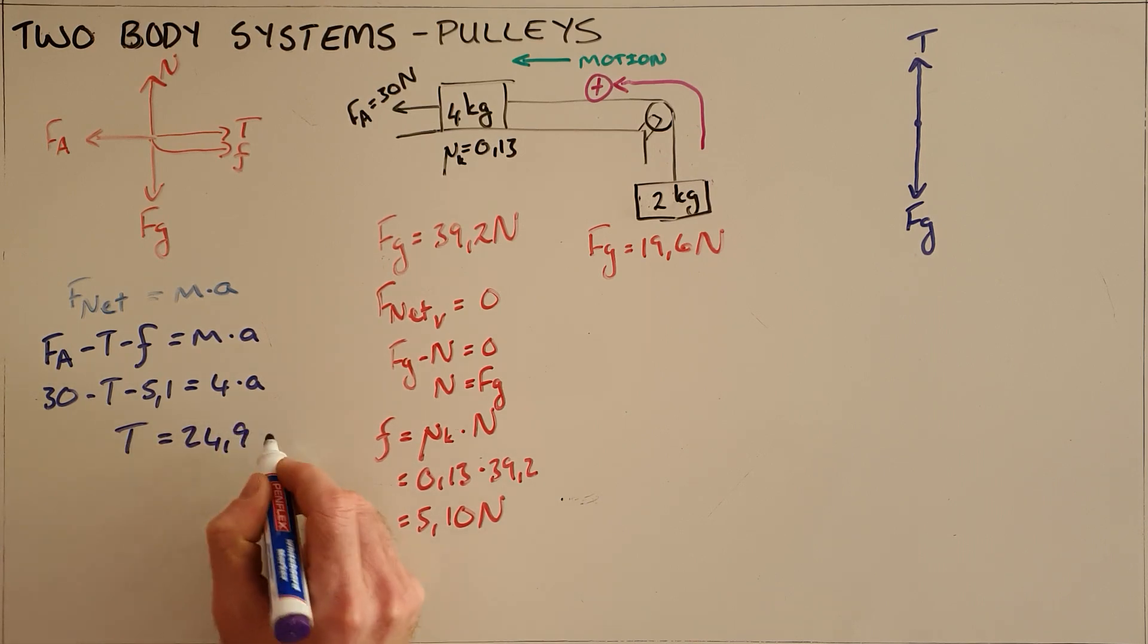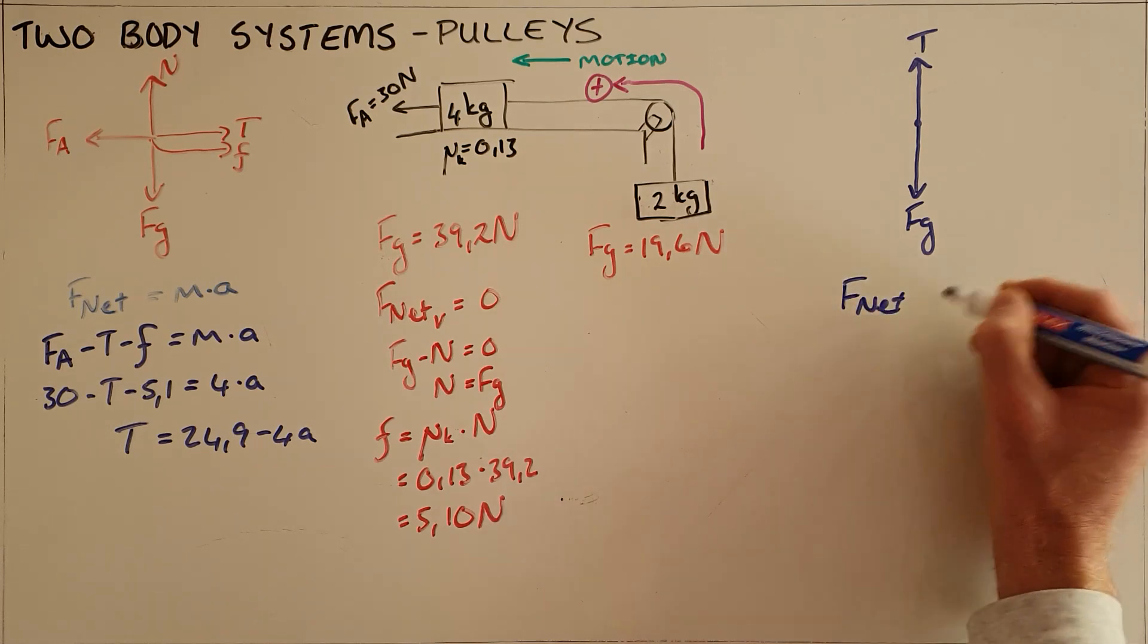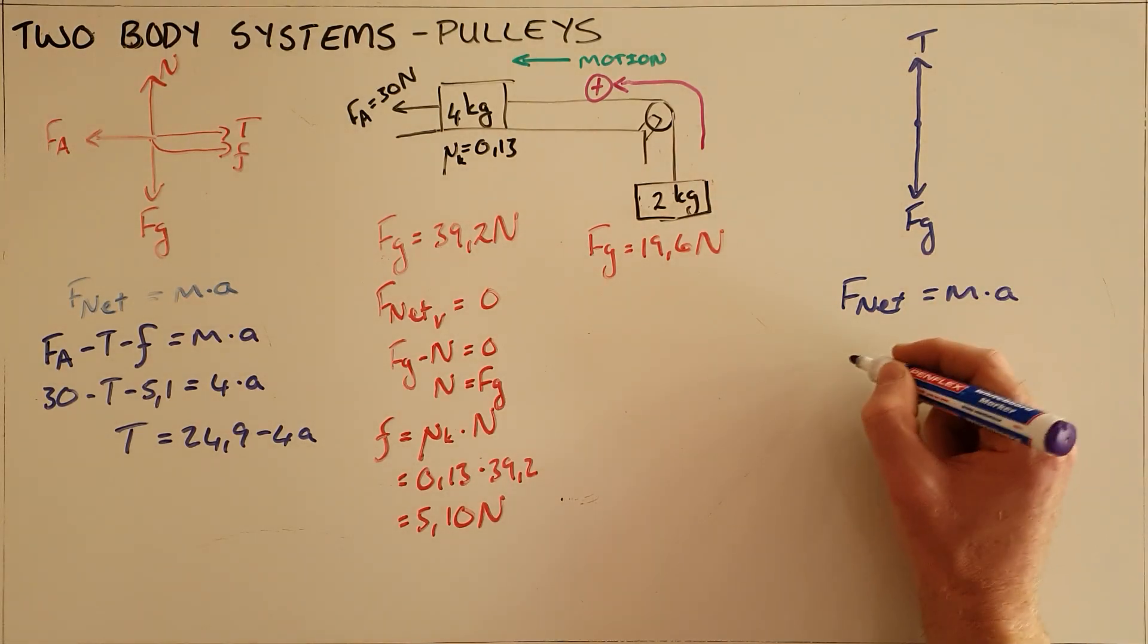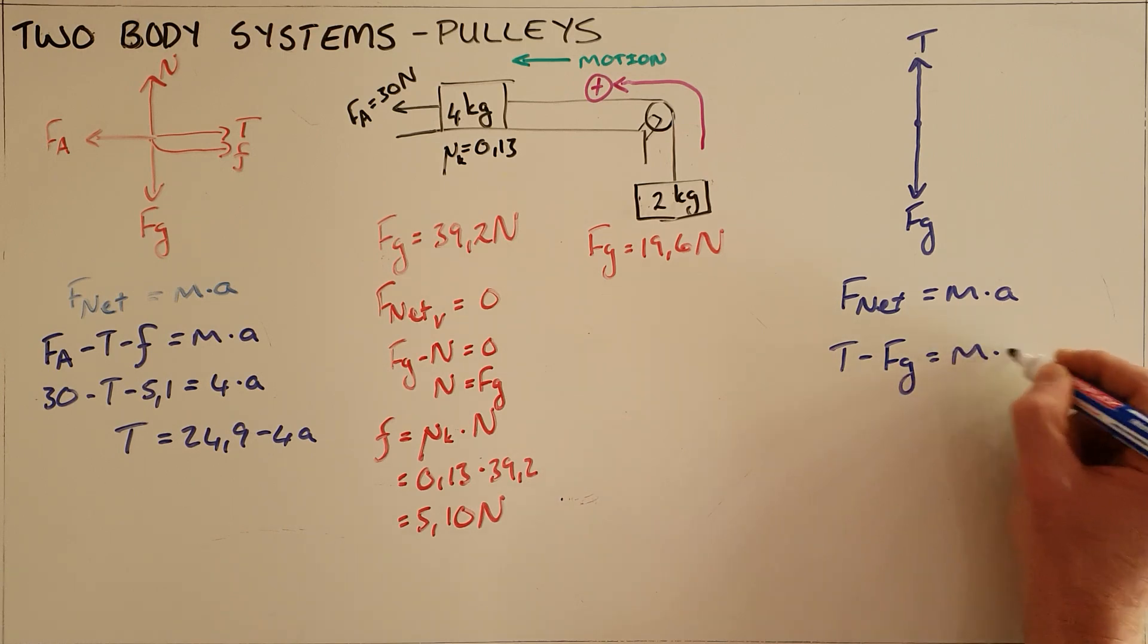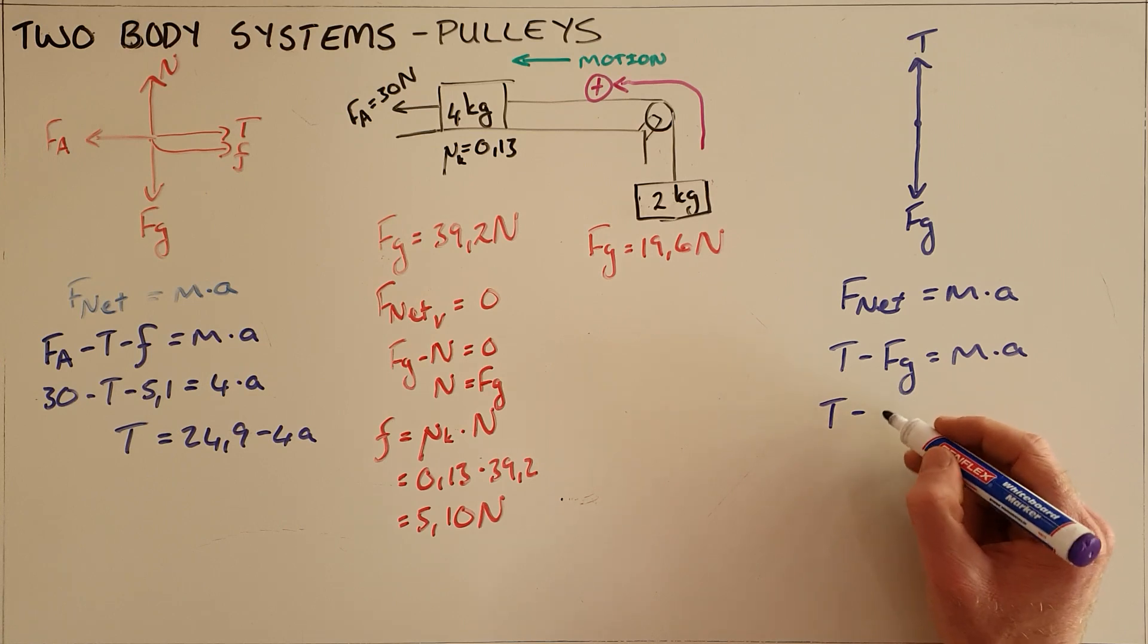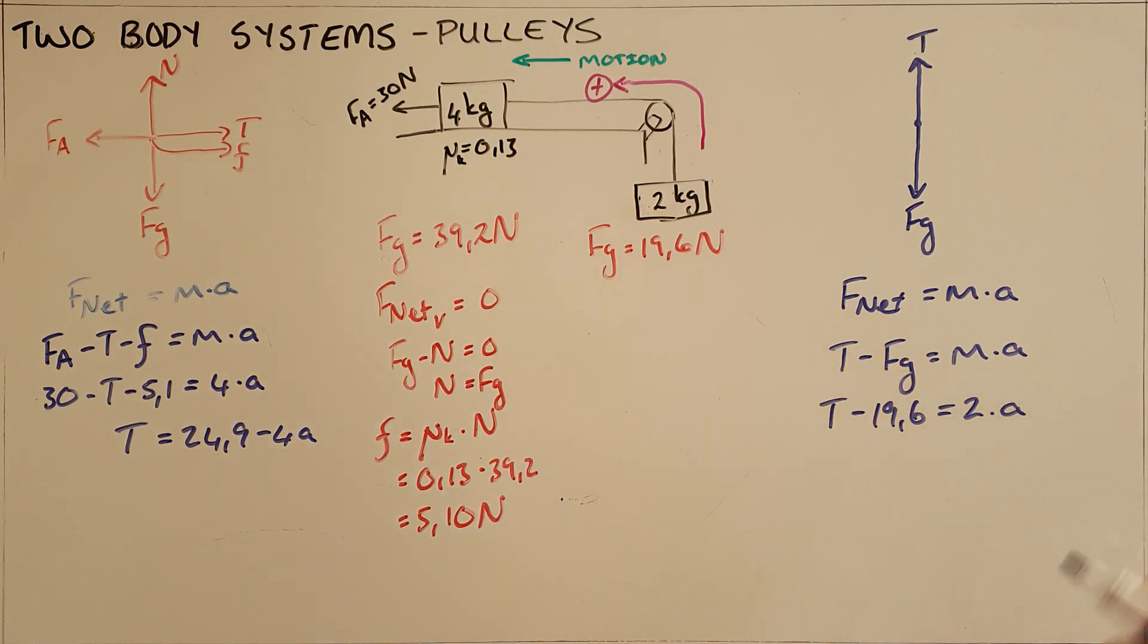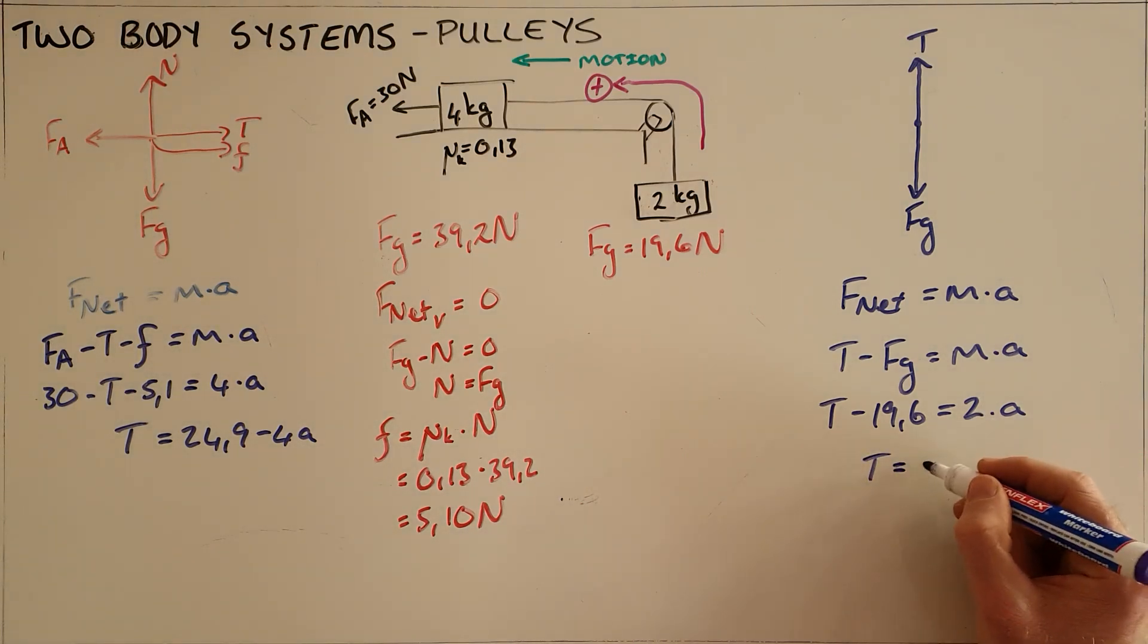We can then do the same for our 2 kilogram object, where we know Newton's second law applies: F_net equals m times a. The net force here is the forces acting upward, that being tension, minus the forces acting downward, that being the force of gravity. The tension is our unknown. The force of gravity has been calculated as 19.6, and that is equal to the mass of this object multiplied by its acceleration, which we can rewrite as tension is equal to 19.6 plus 2a.